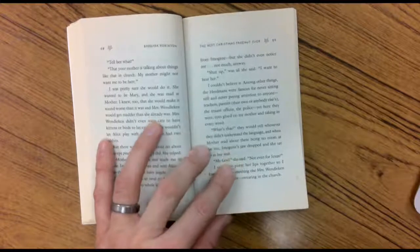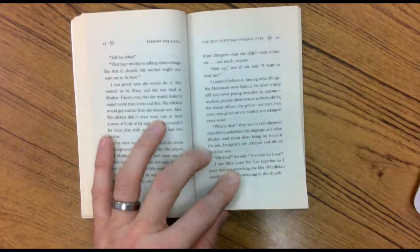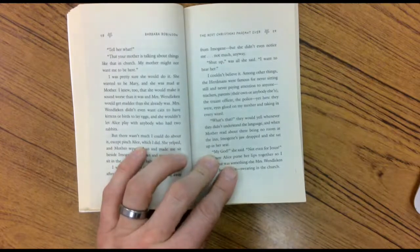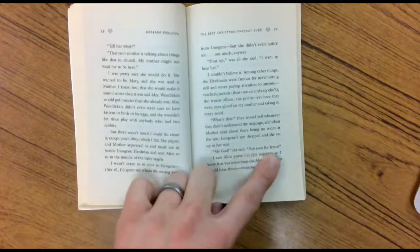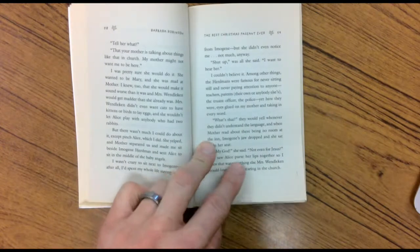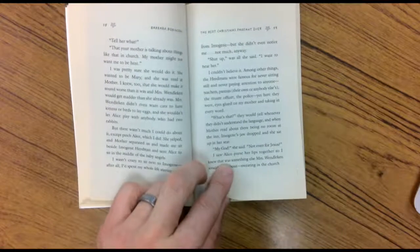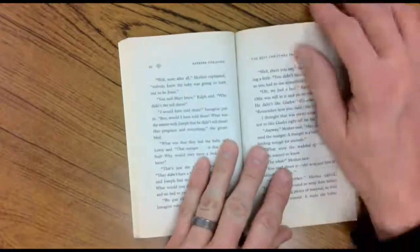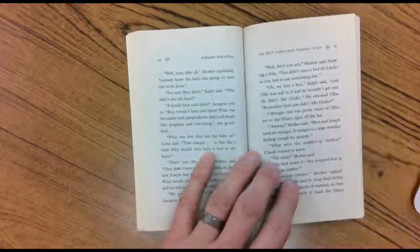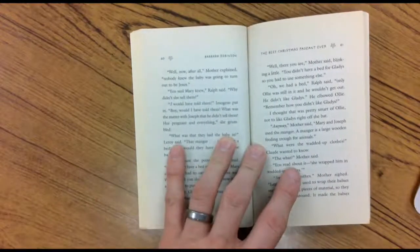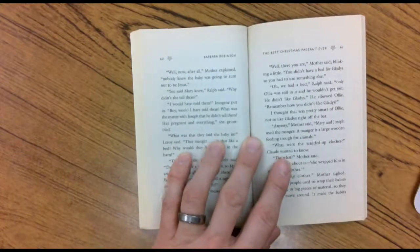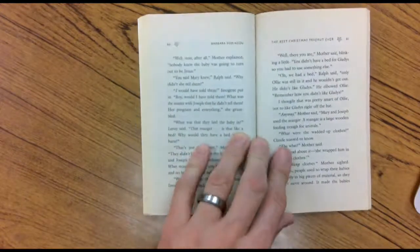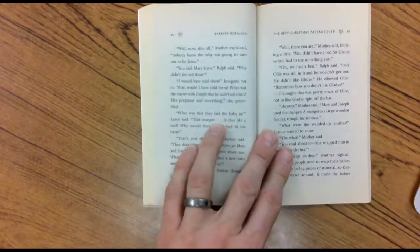Isn't this awesome? These kids are hearing about the word of God. What's that? They would yell whenever they couldn't understand the language. And when Mother read about there being no room in the inn, Imogene's jaw dropped. And she sat up in her seat. My goodness gracious, she said. Not even for Jesus? I saw Alice pushing her lips together. So I knew that was something else Mrs. Wendelkin would hear about. Swearing in church. Well, no. After all, Mom explained, nobody knew the baby was going to turn out to be Jesus. You said Mary knew, Ralph said. Why didn't she tell them? I would have told them, Imogene put in. Boy, would I have told them. What was the matter with Joseph? That he didn't tell them, her pregnant and everything? She grumbled. What was that? They laid the baby in, Leroy asked, the manger.